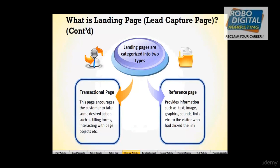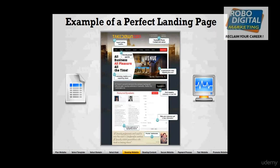Here is an example of a perfect landing page. The first thing is a good-looking headline at the top, then a proper agenda — 'all business, all pleasure, all the time.' Contact details are tracked at the top. There's a good image, sub-headlines, engaging content about speakers, capabilities, and reviews — all generating trust from the user so they register with us.